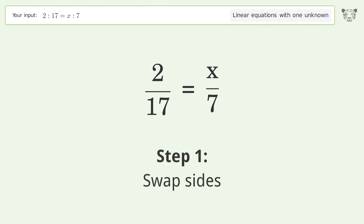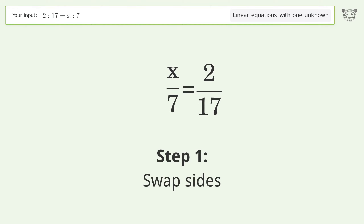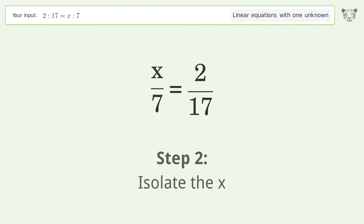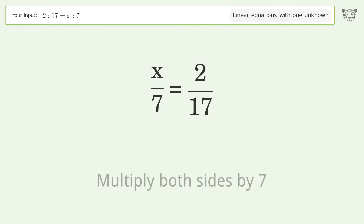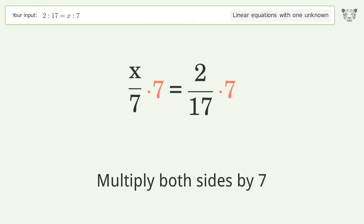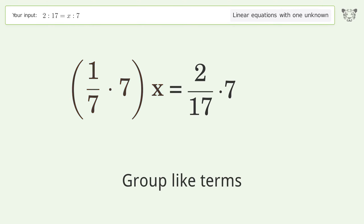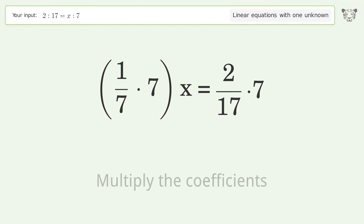Swap sides. Isolate the x. Multiply both sides by 7. Group-like terms.